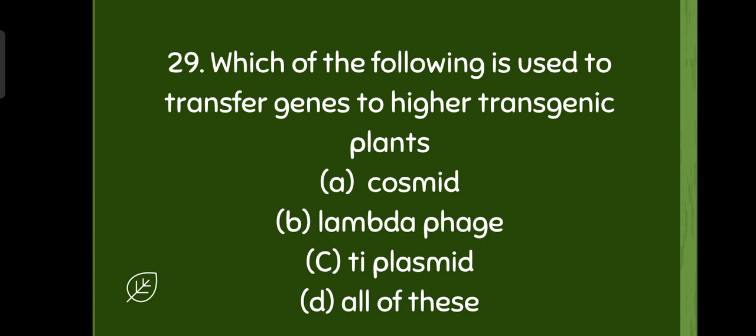Which of the following is used to transfer genes to higher transgenic plants? Cosmid, lambda phage, Ti plasmid, all of these. The right option is all of these.